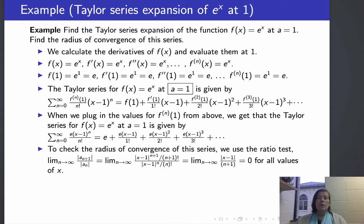And to check the radius of convergence of this series, we can use the ratio test. When we calculate the limit as n goes to infinity of the n plus 1th term over the nth term, then it's the limit as n goes to infinity of the absolute value of x minus 1 over n plus 1, and no matter what the x is, this is going to go to 0. So therefore, this Taylor series expansion of e to the x at 1 converges for all values of x, and its radius of convergence is infinity.